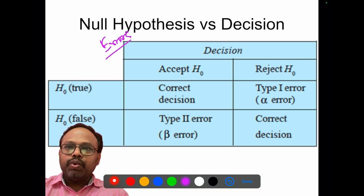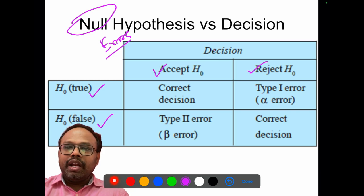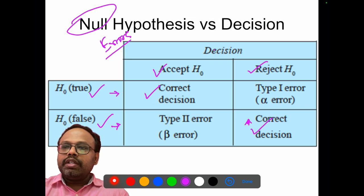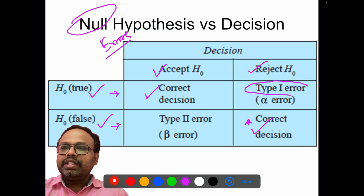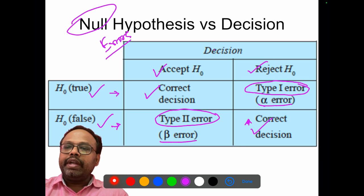In any research, we try to prove or disprove the null hypothesis. In reality, there are two possibilities: the null hypothesis may be either true or false, and your decision may either accept or reject it. If the null hypothesis is actually true and you reject it, that is a correct decision. If it is false and you reject it, that is also correct. There are two errors possible: when you reject the null hypothesis when it is actually true, it is called type 1 error or alpha error. When you falsely accept the null hypothesis when it is actually false, it is called type 2 error or beta error.